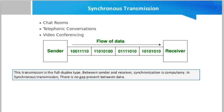In synchronous transmission, data is sent in form of blocks or frames. This transmission is the full duplex type between sender and receiver. Synchronization is compulsory in synchronous transmission. There is no gap between data.